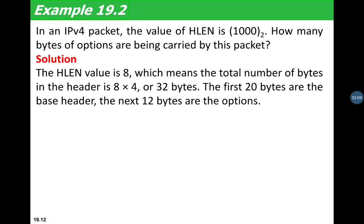Example 2: In an IPv4 packet, the HLEN value is 1000 in binary, which equals 8. The total number of bytes in the header is 8 × 4 = 32 bytes. Since the first 20 bytes are the base header, the remaining 12 bytes are options. So this packet carries 12 bytes of options.